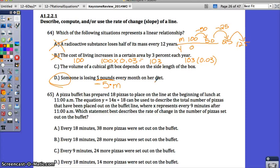Problem 65: A pizza buffet has prepared 18 pizzas to place on the line at the beginning of lunch at 11 a.m. The equation y = 14x + 18 can be used to describe the total number of pizzas that have been placed out on the buffet line. Now, read this part carefully because this is what they're telling you. This is really important. Where x represents every 9 minutes after 11 a.m.